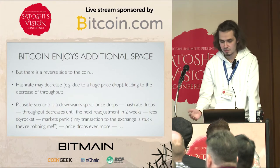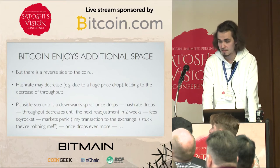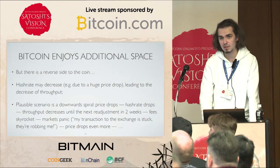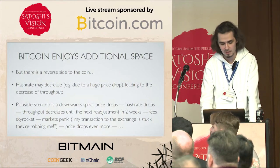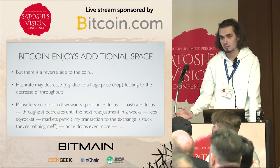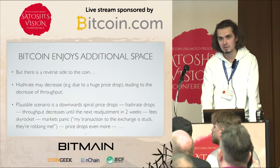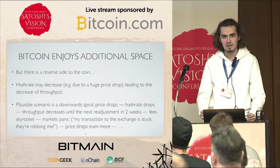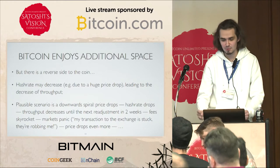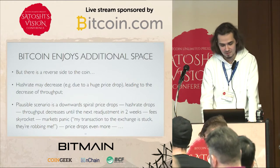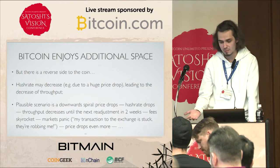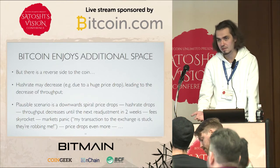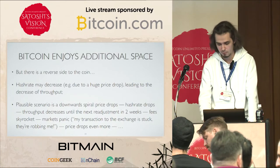In a downward spiral scenario: the price drops, the hash rate drops, the throughput decreases until the next readjustment in two weeks. Fees skyrocket as we've witnessed many times. The markets begin to panic — everyone here has seen posts on Bitcoin forums: 'my transaction is stuck,' 'the exchange is trying to rob me,' 'Bitcoin is not working.' So the price drops even more because of the panic, hash rate drops even more, and we have a negative loop. So it's a bad thing for Bitcoin.